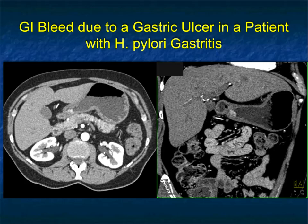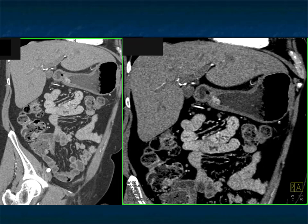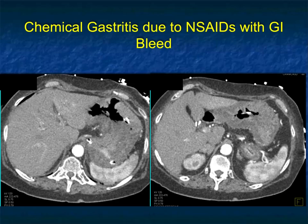Another patient has a GI bleed due to a gastric ulcer in the setting of H. pylori gastritis. There is a high-density zone in the antrum with thickening. While this is clearly a site of bleeding, one must be careful — you cannot exclude an underlying malignancy such as adenocarcinoma, so this patient will eventually be scoped. On coronal view, the thickening in the antrum and the high-density representing the bleed are very nicely shown.